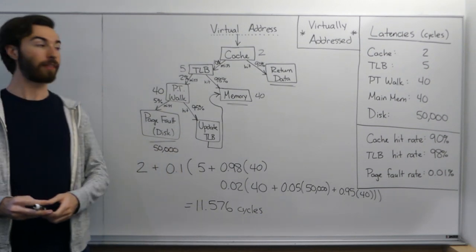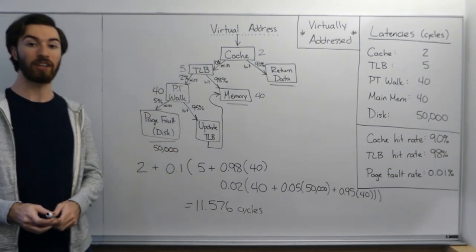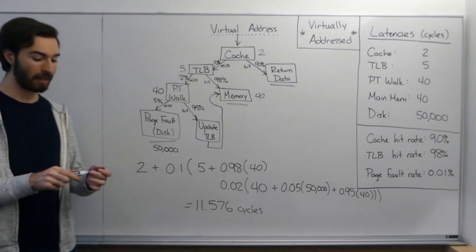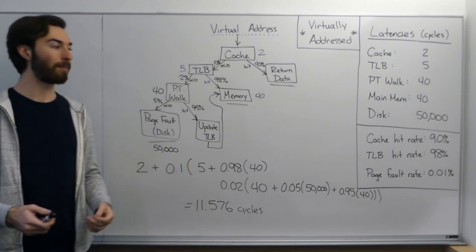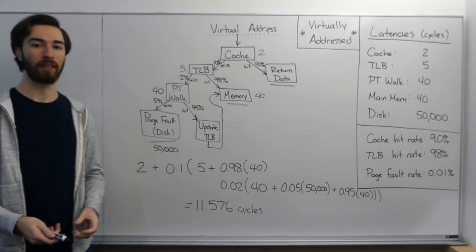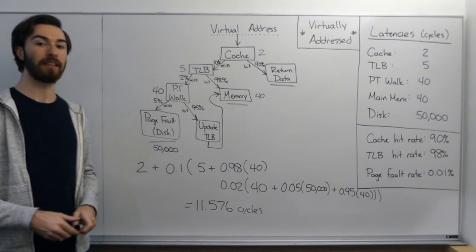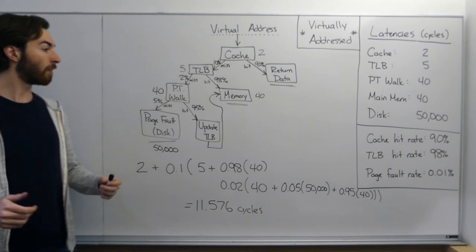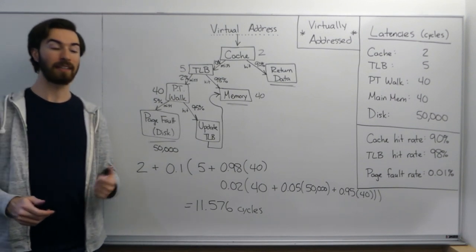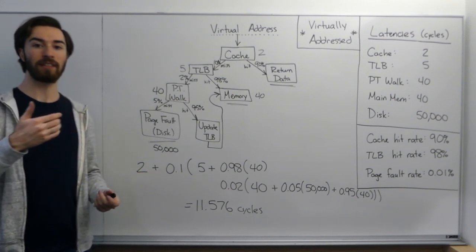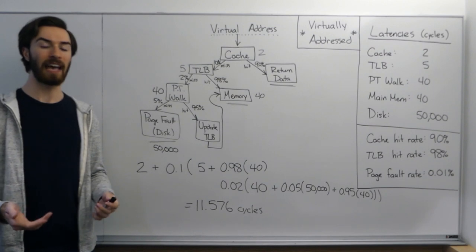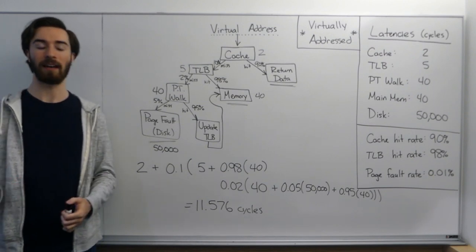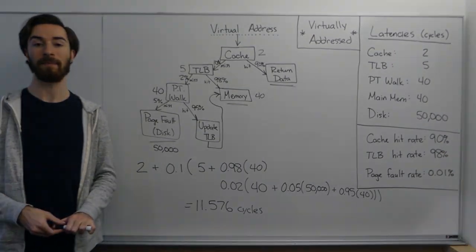So just like we figured out, the virtually-addressed cache is a little bit faster than the physically-addressed cache, but of course it comes with the drawback of needing to evict everything in the cache and invalidate it every time you swap processes. And so that's an overview of how you might tackle these sorts of virtually-addressed and physically-addressed cache problems in homeworks or exams, and I hope you now have a better understanding of the differences between them.